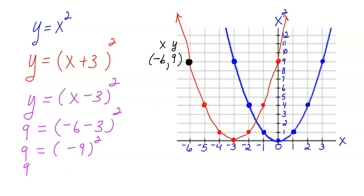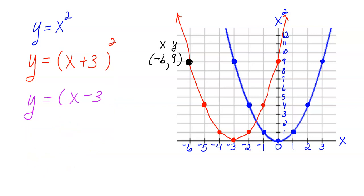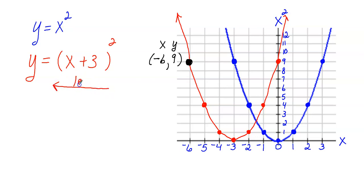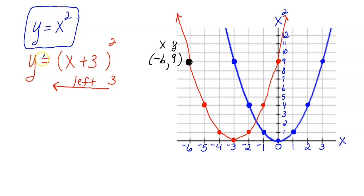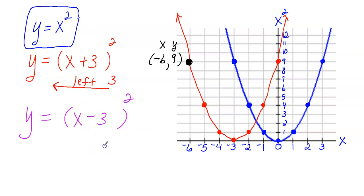Be careful with these horizontal translations — they're tricky. When it's y equals the quantity x plus 3 squared, the graph moves left 3 units. How would you move the graph right 3 units? You would replace the x with x minus 3, and this would move everything to the right 3 units.